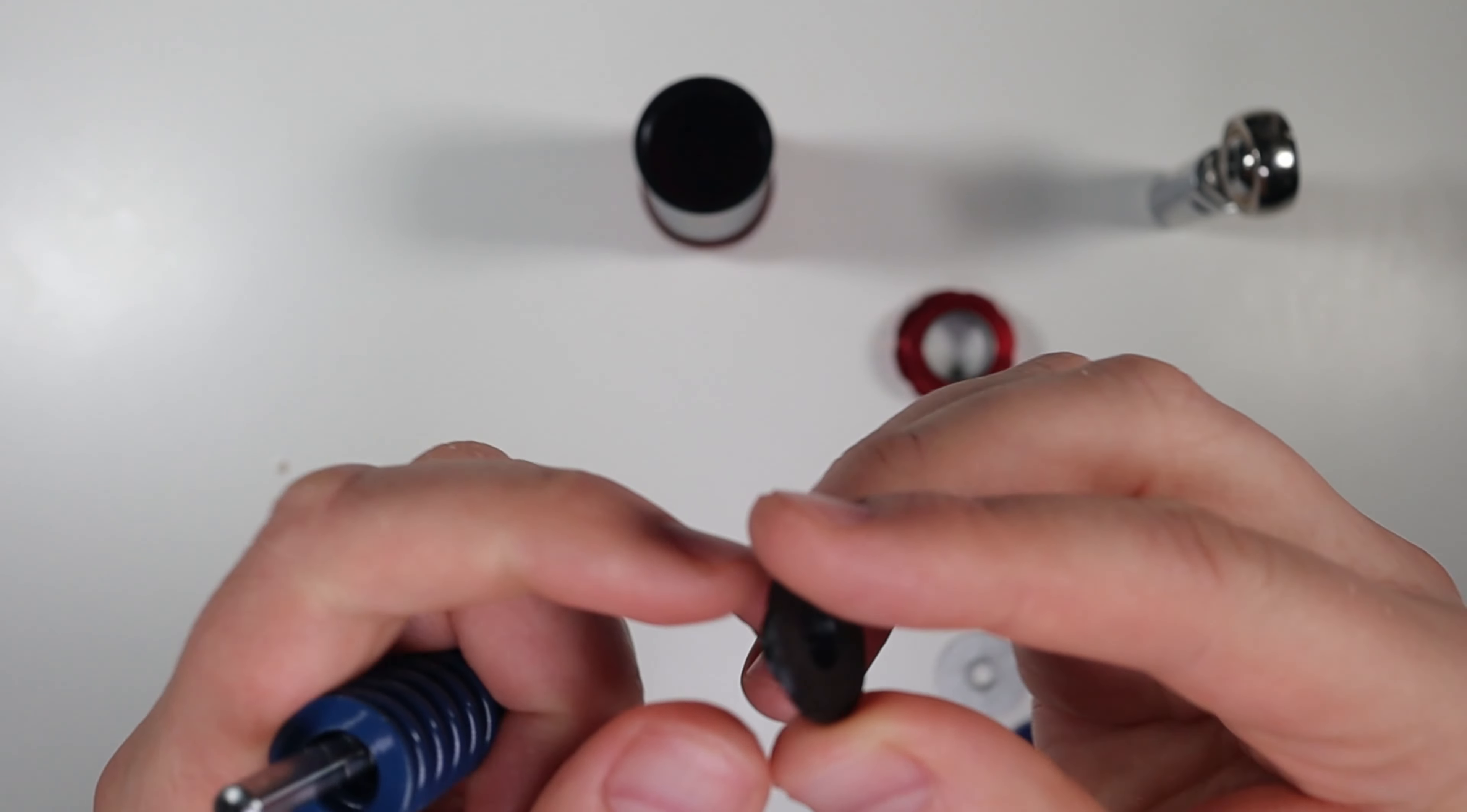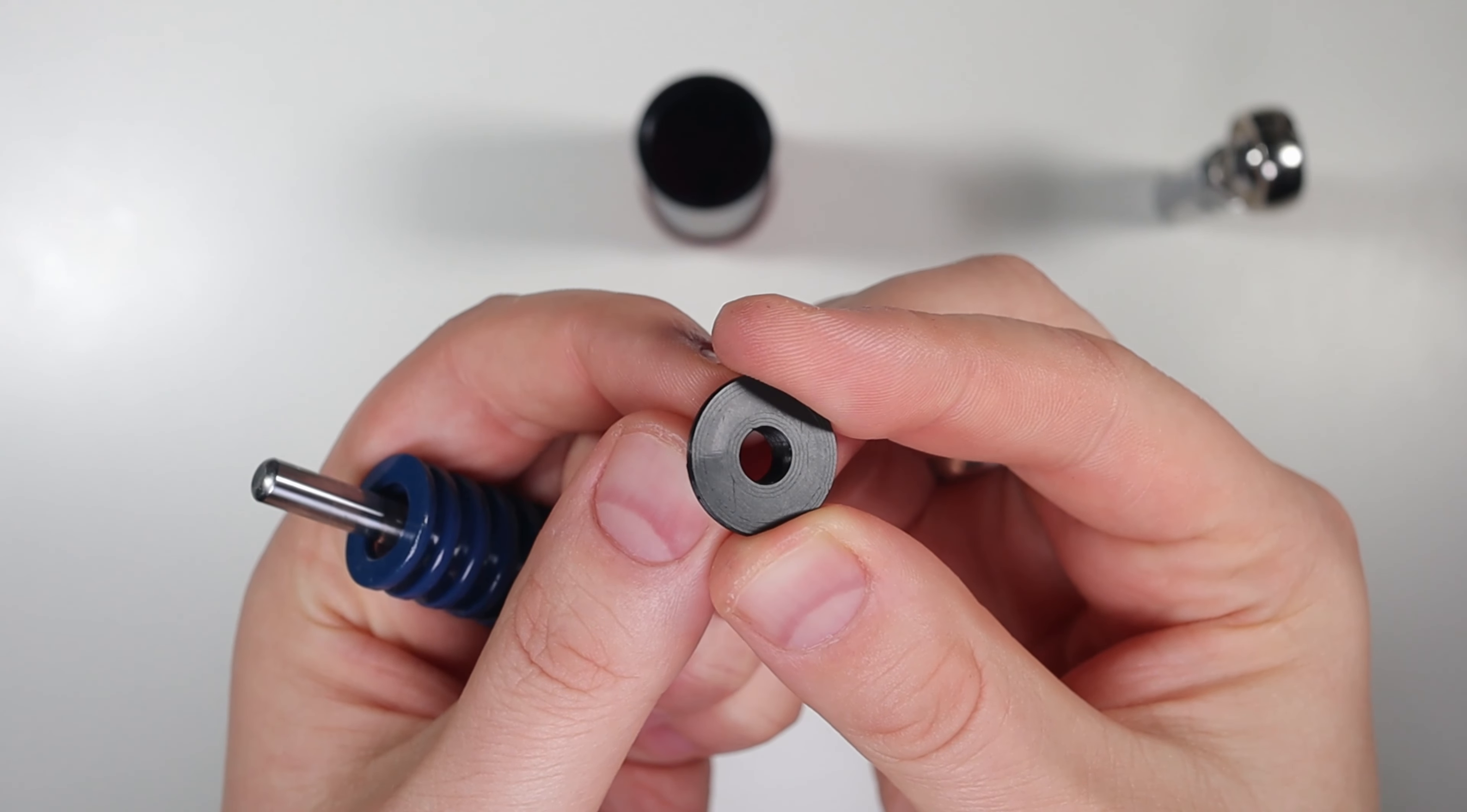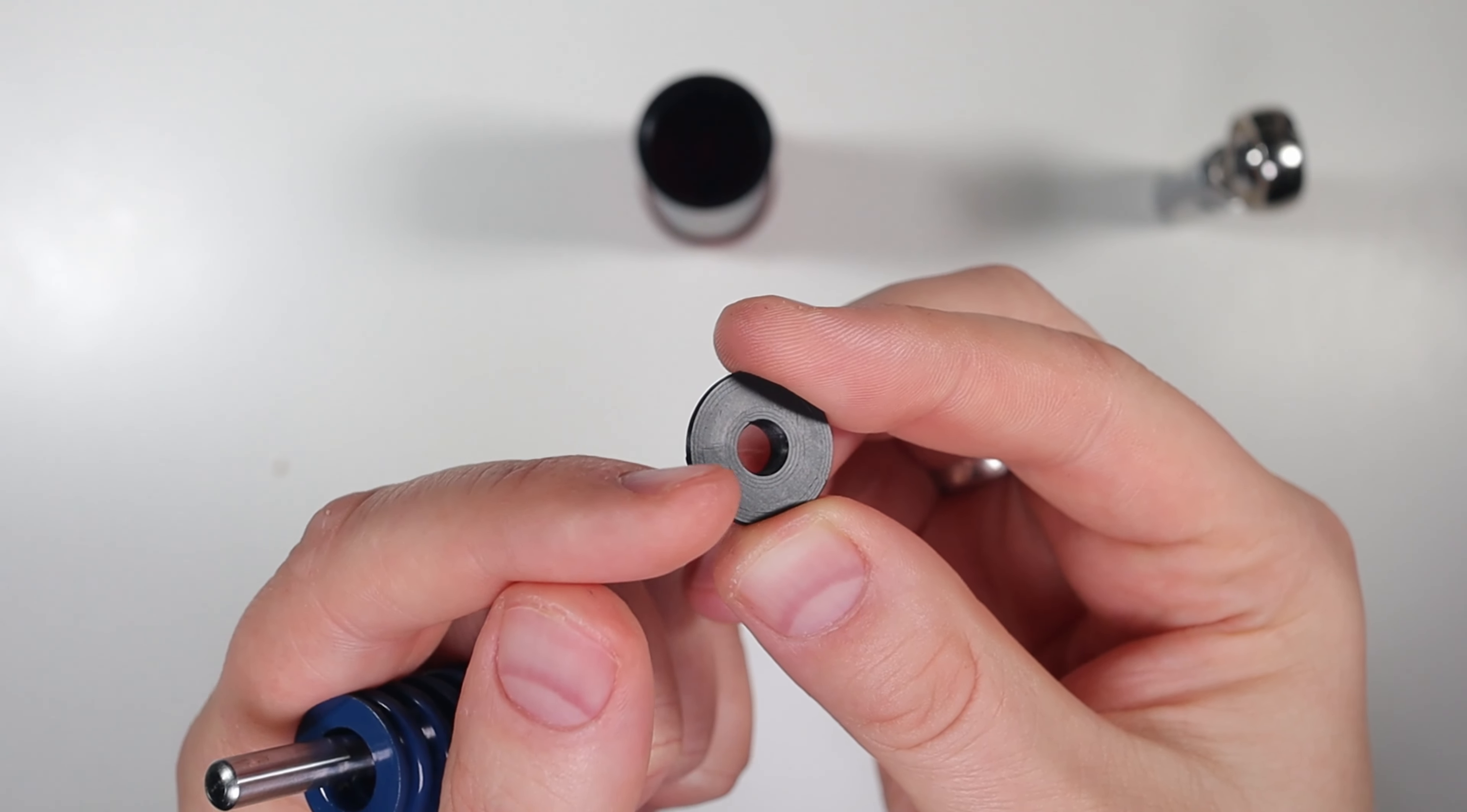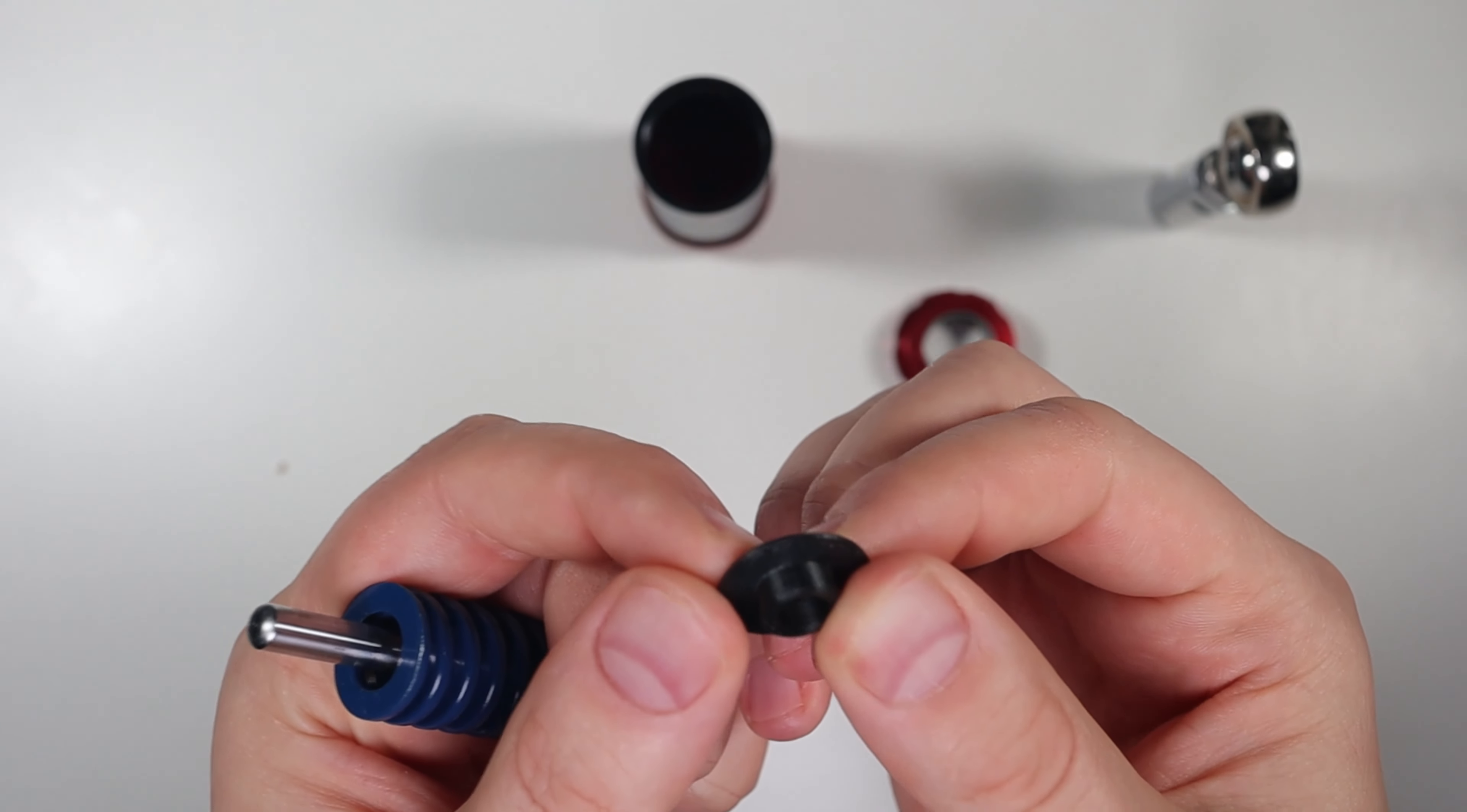But if you look at the 3D printed piece, you might notice at the correct angle, it started damaging the 3D printed piece. Obviously, this is just plastic. It's not strong enough.